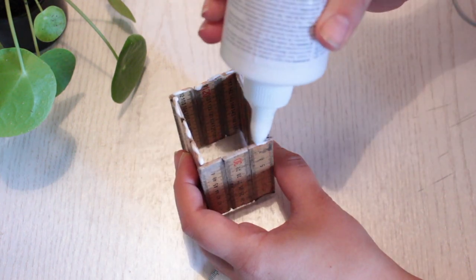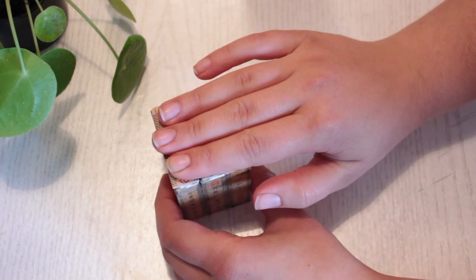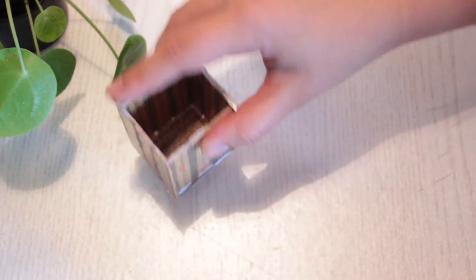When they're all dried up, put some glue on one opening of the planter. Then attach the bottom piece and let the whole thing dry completely.